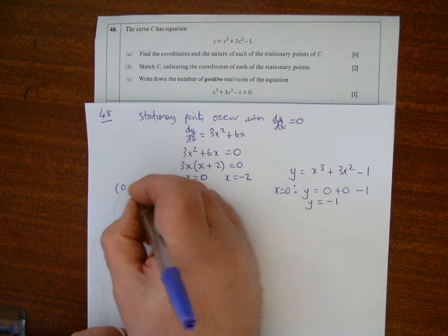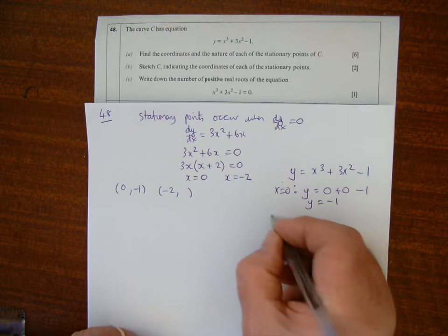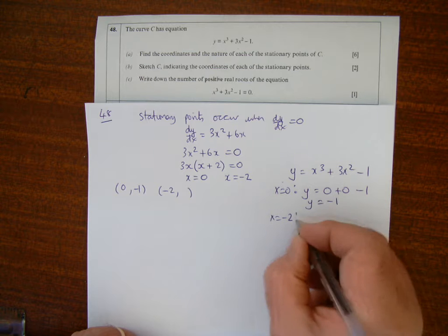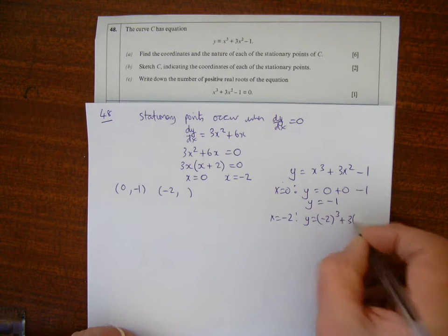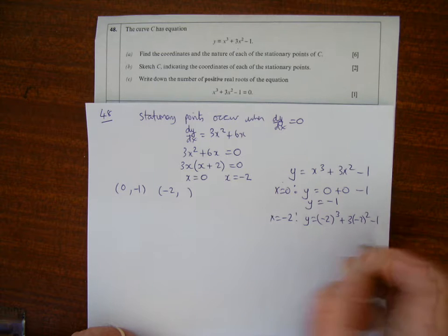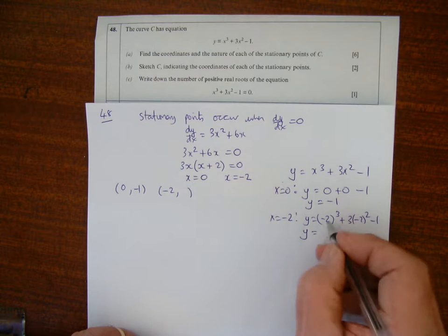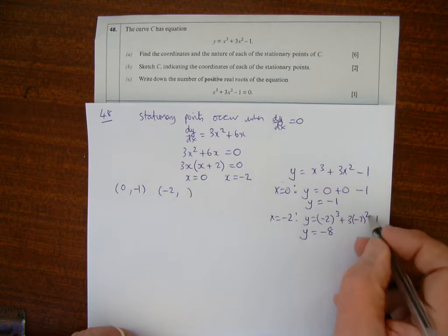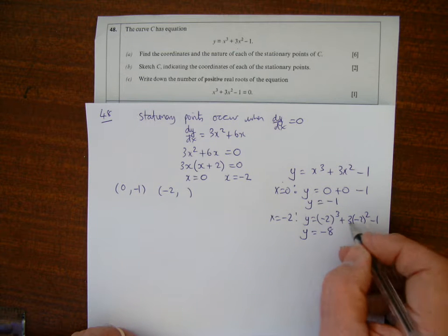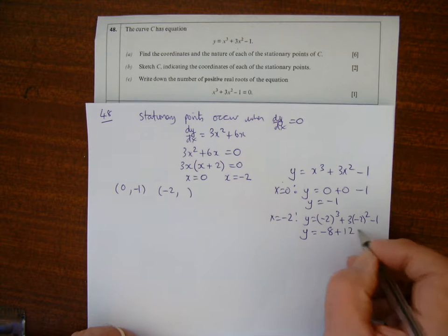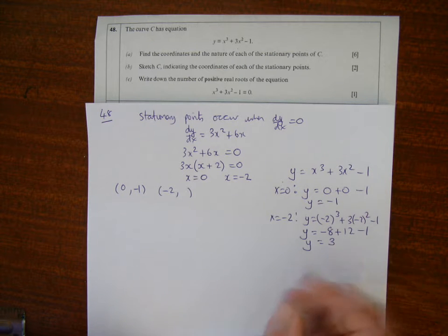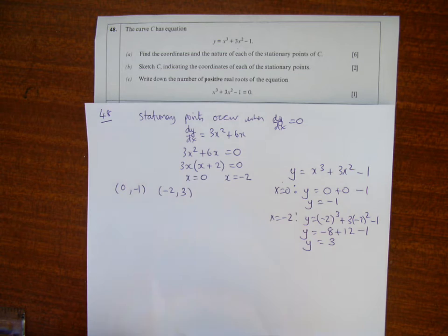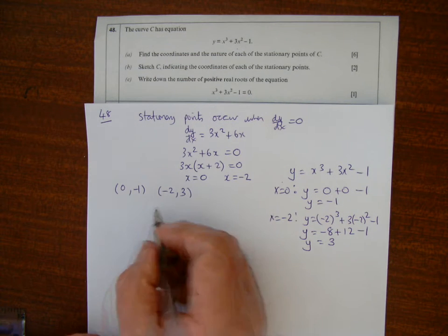If x = -2, then y = (-2)³ + 3(-2)² - 1. That's -8 + 3(4) - 1 = -8 + 12 - 1 = 3. So the coordinates are (0, -1) and (-2, 3).